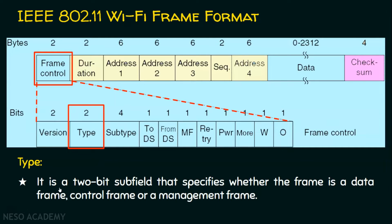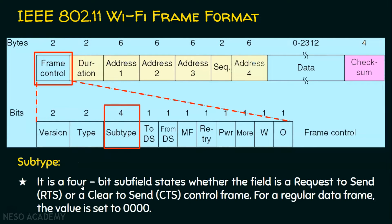The next subfield is the type field, also a two-bit subfield. It specifies whether the frame is a data frame, a control frame, or a management frame. Then comes the subtype subfield, which is a four-bit subfield. It states whether the frame is a Request to Send (RTS) or a Clear to Send (CTS) control frame. For a regular data frame, this value is set to 0000.